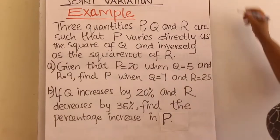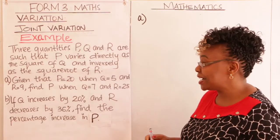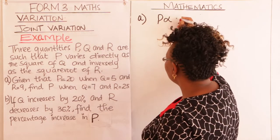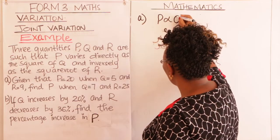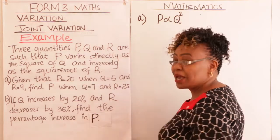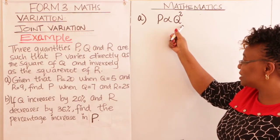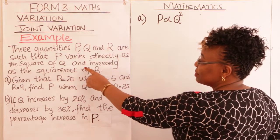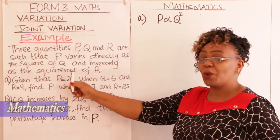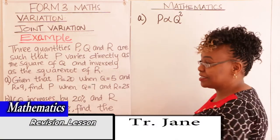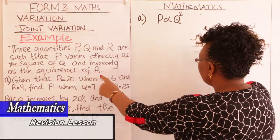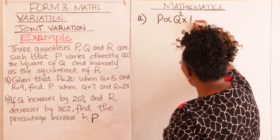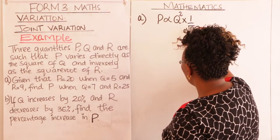How do you write that in short, learner? P varies directly as the square of Q — that is Q squared. We have looked at direct variation; we normally write it like that. And at the same time, inversely as the square root of R. In joint variation, you multiply the two parts. Inverse means 1 over the square root of R.